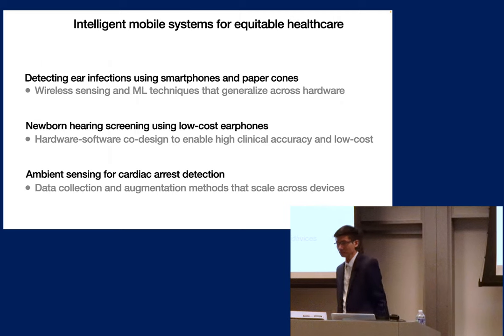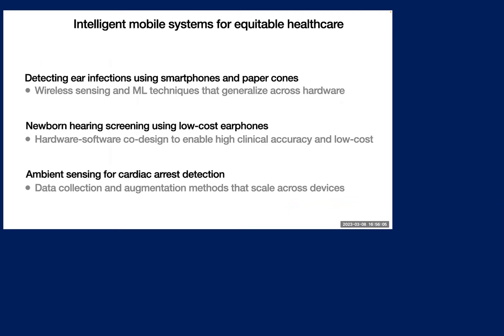Q: Smartphones keep gaining more sensors — do you have dream features that would transform your sensing work? A: The smell sensor is one exciting direction — a very nascent technology with a lot of open problems. For example, how do you best represent smell? Visually we have RGB, but we don't have the basis functions for smell. You could imagine using this for computational design of new pesticides or diagnosing diseases far more effectively than today's devices.